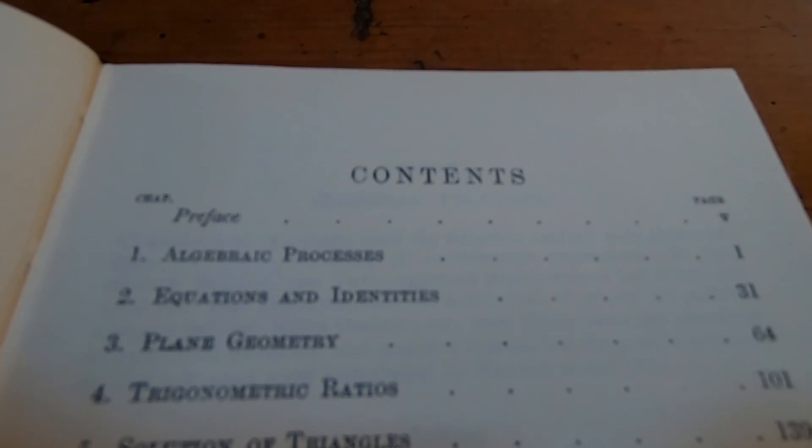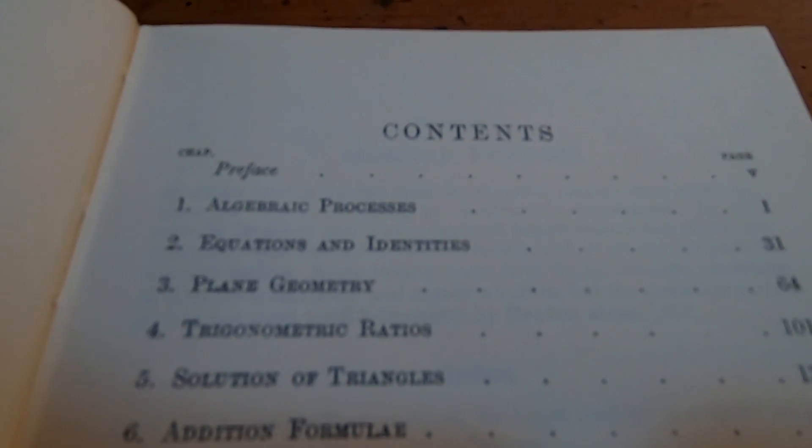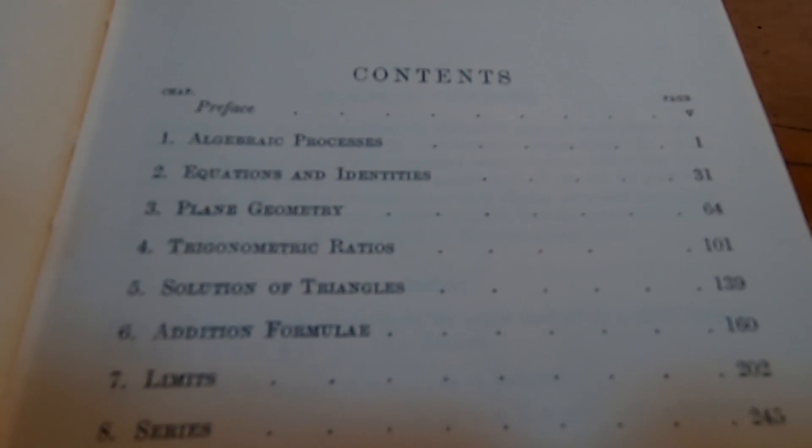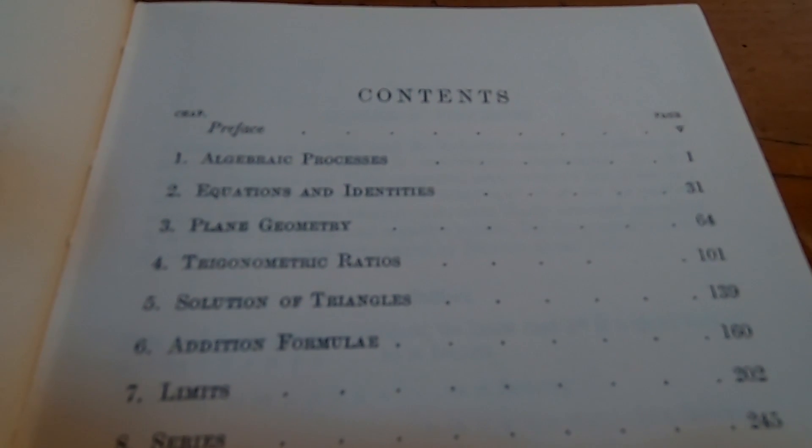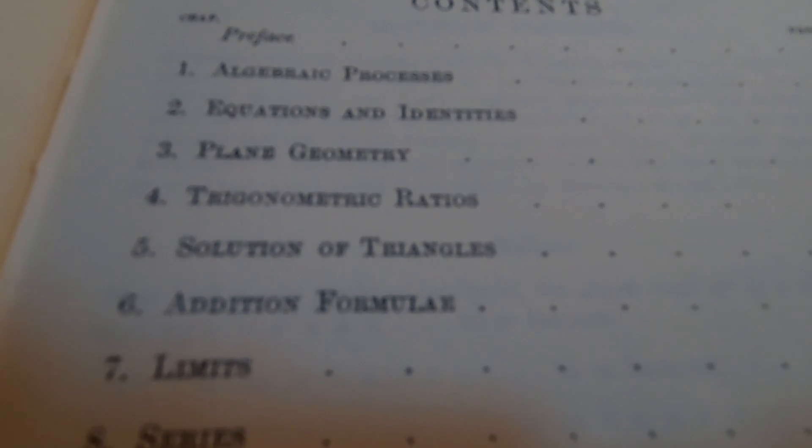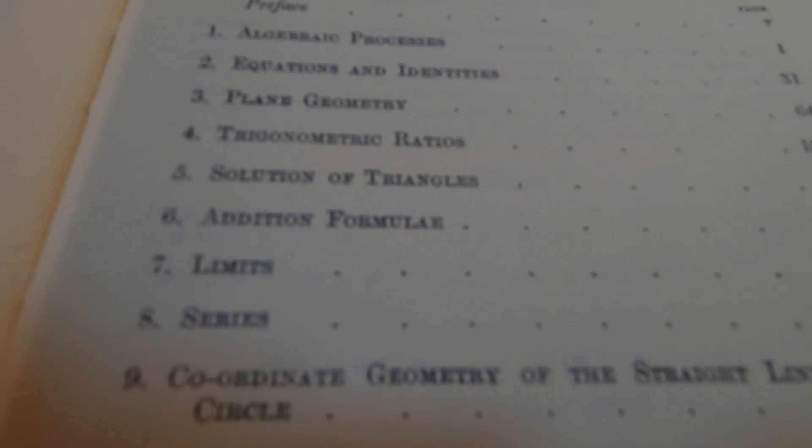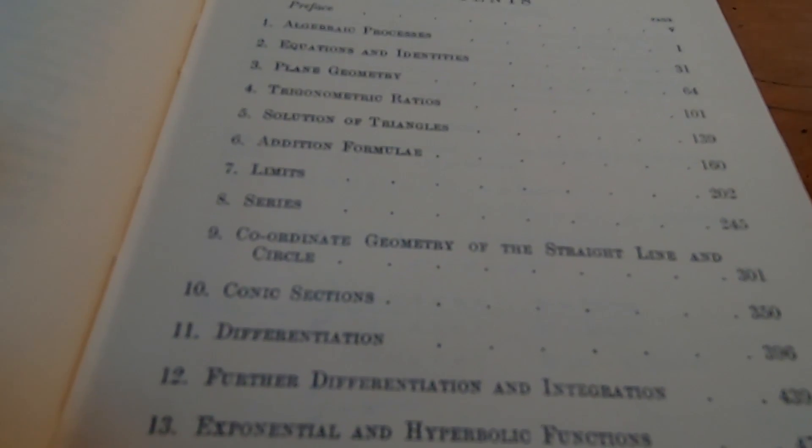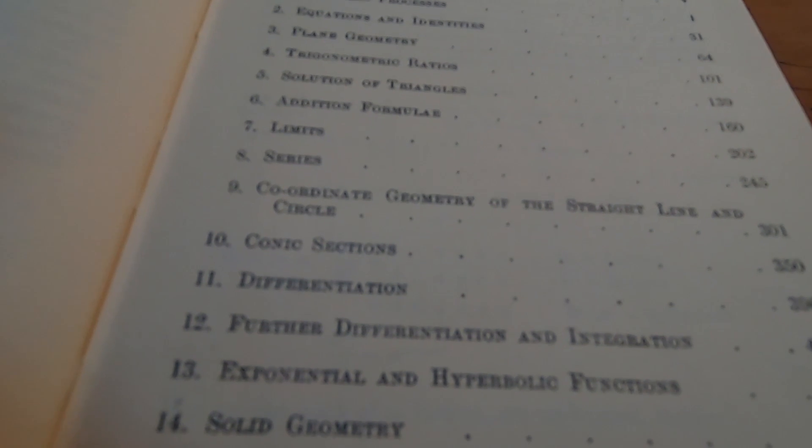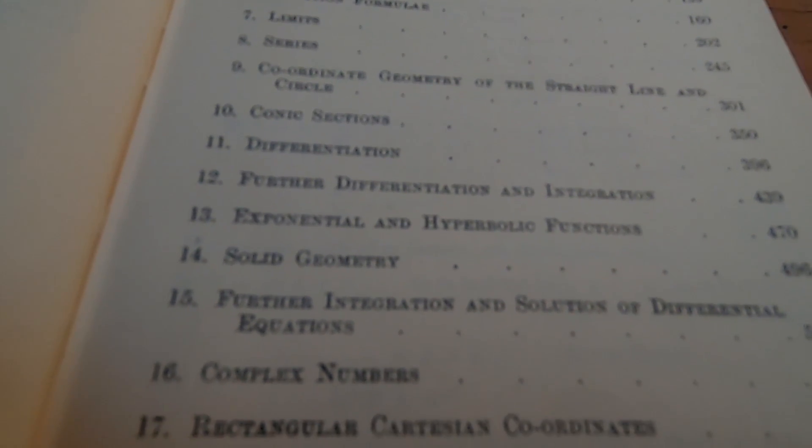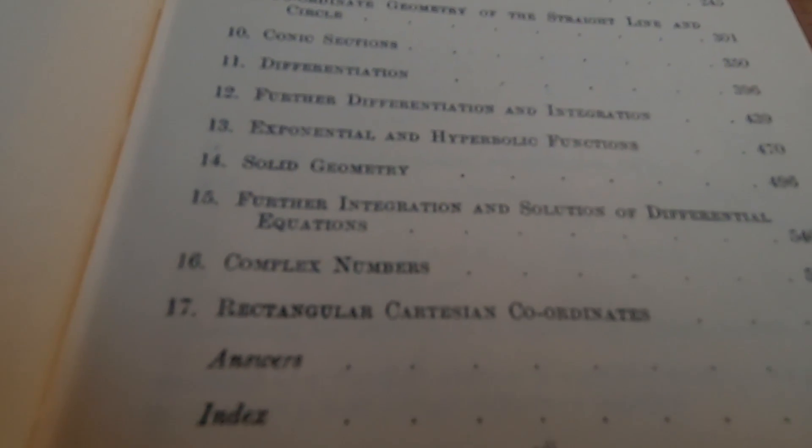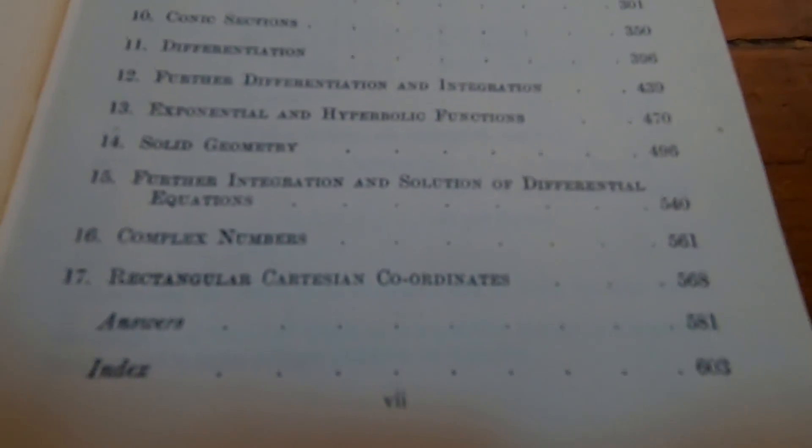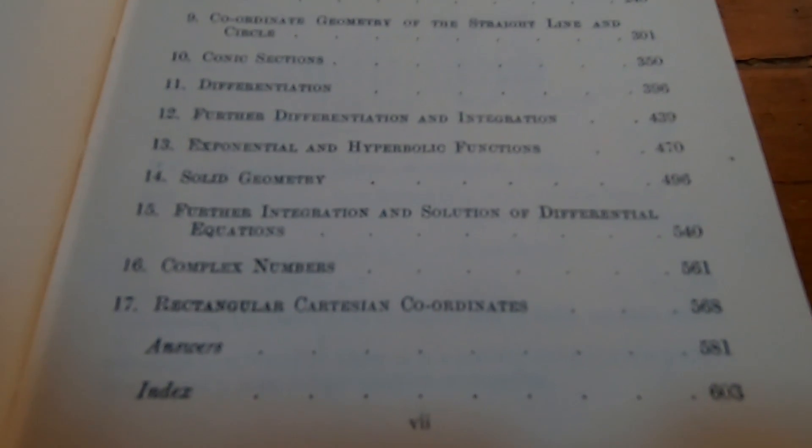So here's the table of contents. It starts with algebraic processes, equations and identities, plane geometry, trigonometric ratios, solution of triangles, addition formulae. I love the language. Limits, and now we can use some calculus. Series, coordinate geometry of the straight line and circle, conic sections, differentiation, some more differentiation, some geometry, complex numbers, and then the answers. So the book does actually have answers, which is really nice.